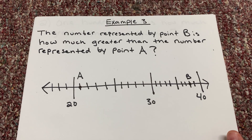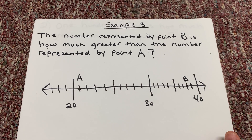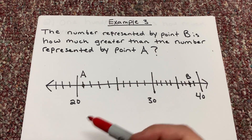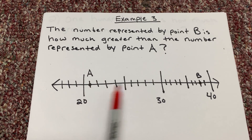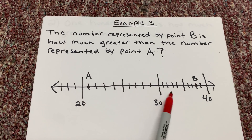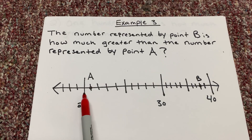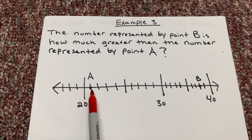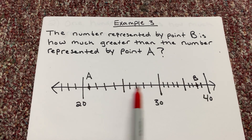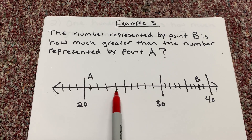Example 3 says: the number represented by point B is how much greater than the number represented by point A? We've been doing number lines in 4th grade. Before we figure out the answer, we want to see what we're dealing with — looking at the tick marks between our numbers. I'm going to start with 20 here, and I first want to figure out what they're counting by. I see 1, 2, 3, 4 tick marks.